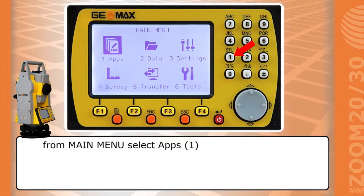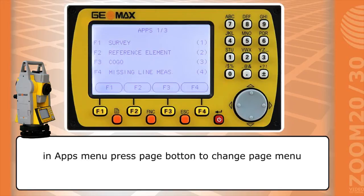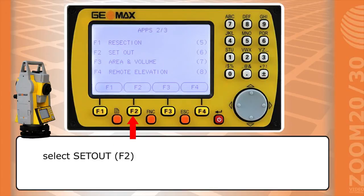From main menu select apps. In apps menu press page button to change page menu. Select set out.